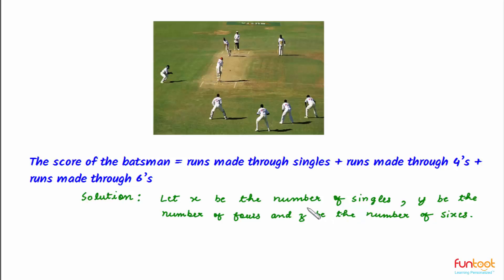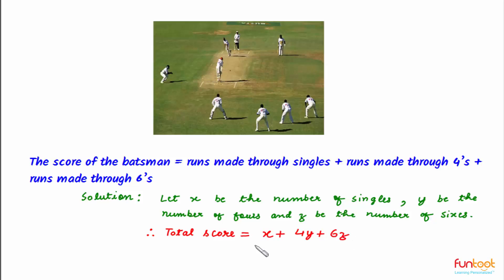Let x be the number of singles, y be the number of fours, and z be the number of sixes scored by the batsman. Therefore, the total score of the batsman will be equal to x plus 4y plus 6z. It is given that the total score is equal to 84, so this implies x plus 4y plus 6z is equal to 84.